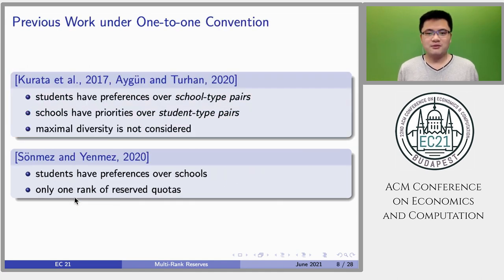Some existing papers also consider the one-to-one convention. For instance, in Kulata et al., 2017, the authors assumed that students have preferences over school-type pairs, and schools have priorities over student-type pairs. This is different from our setting, where students have preferences over schools, and they do not consider an important property, maximal diversity.